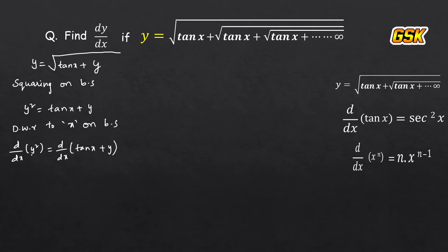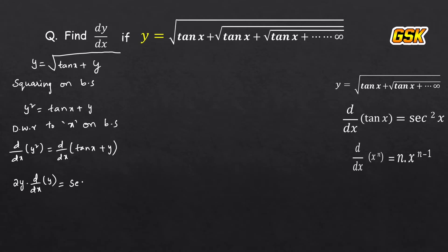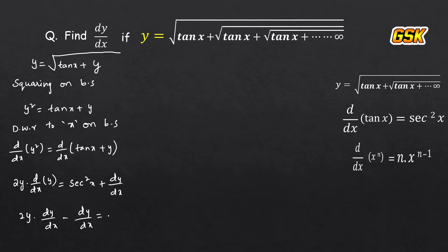Since y is a function of x, applying the chain rule concept, d by dx of y squared becomes 2y into dy by dx. The differentiation of tan x is sec squared x, and differentiation of y gives dy by dx. So bringing all dy by dx terms to one side: 2y into dy by dx minus dy by dx equals sec squared x.